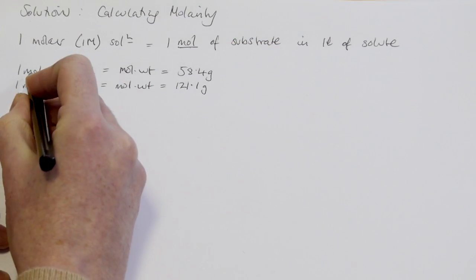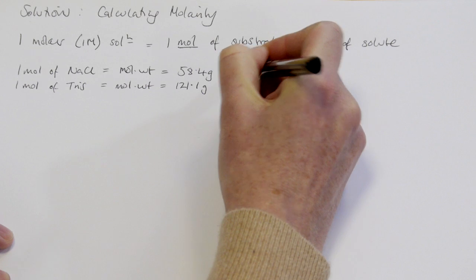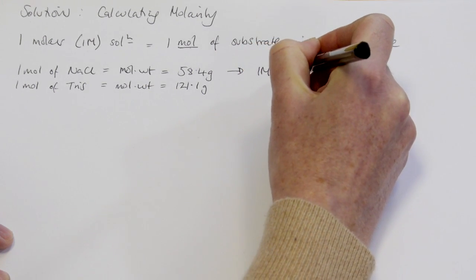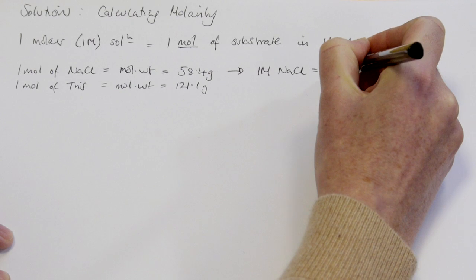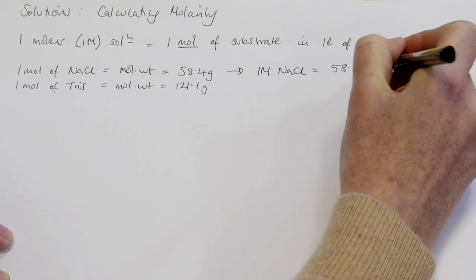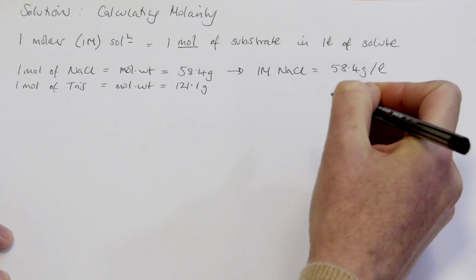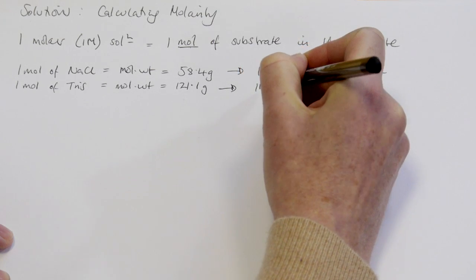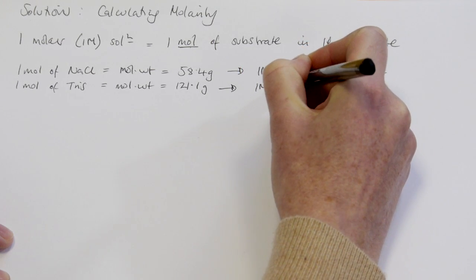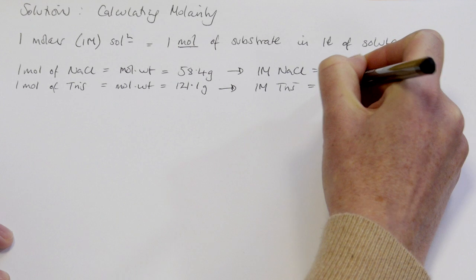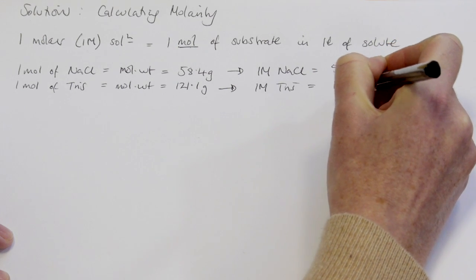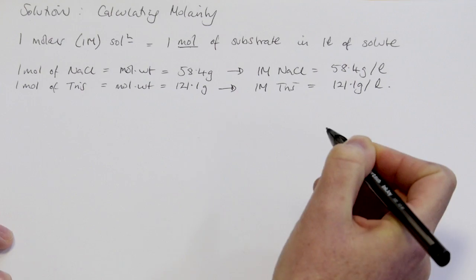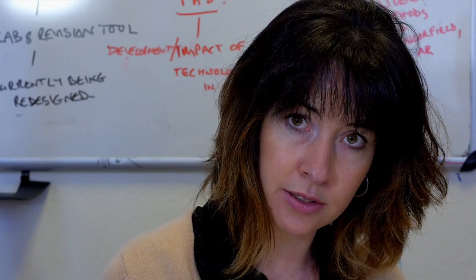So to make either of these into a one molar solution: one molar sodium chloride is its molecular weight dissolved in a litre of solute. The same for Tris — a one molar solution of Tris equals its molecular weight measured out and solubilised in a litre of solute.